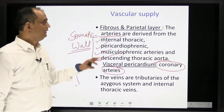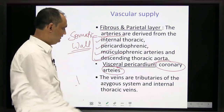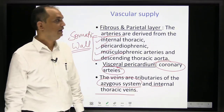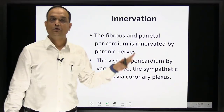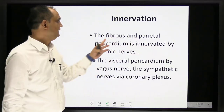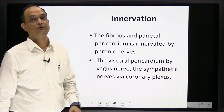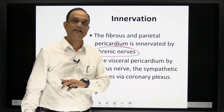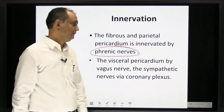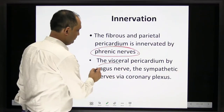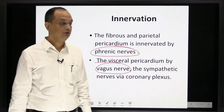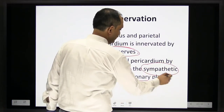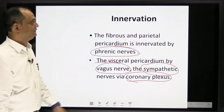Venous drainage: the fibrous and parietal pericardium drain into the azygos system of veins and the internal thoracic vein. Regarding innervation: the parietal pericardium is pain-sensitive because it is supplied by the phrenic nerve (a somatic nerve). The visceral pericardium is pain-insensitive because it is supplied by the autonomic nervous system — the vagus nerve (parasympathetic) and sympathetic nerves via the coronary plexuses.